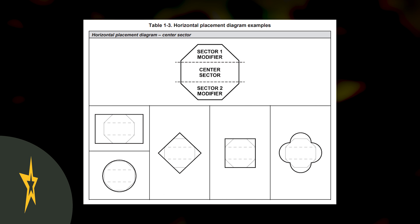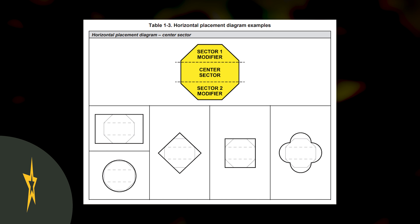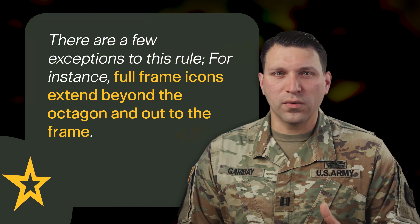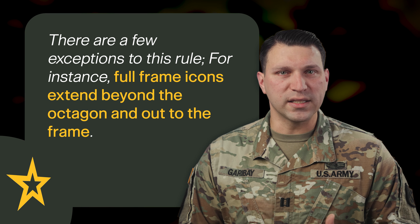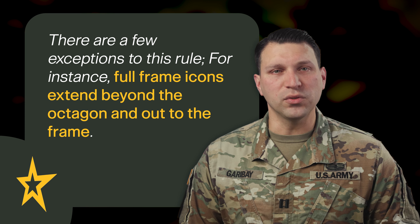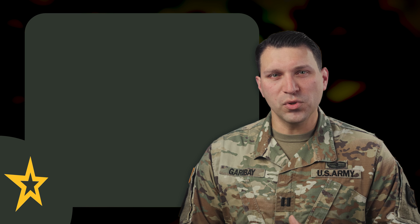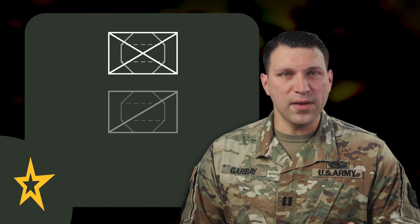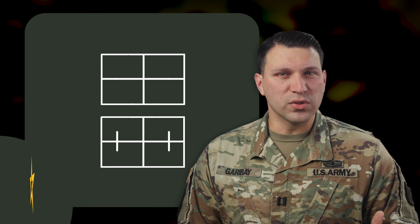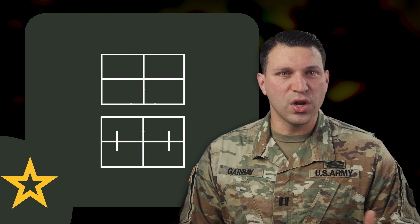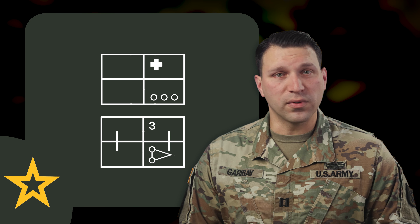Additionally, all symbols must fit into the bounding octagon. That way, no matter which frame you choose, the symbol will fit. Now, there are a few exceptions to this rule. For instance, full-frame icons extend beyond the octagon and out to the frame. Examples of this are infantry, cavalry, and medical symbols. Medical and medical treatment symbols also have a special exception, where their sector 1 and 2 modifiers are placed to the right of the center line for visibility.